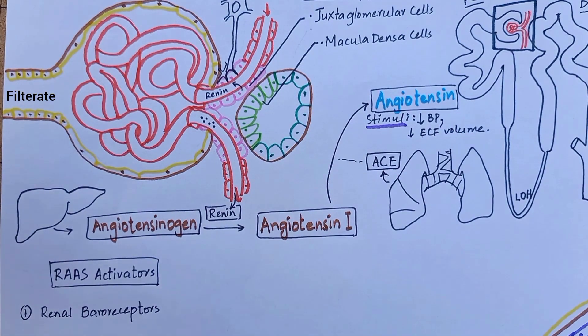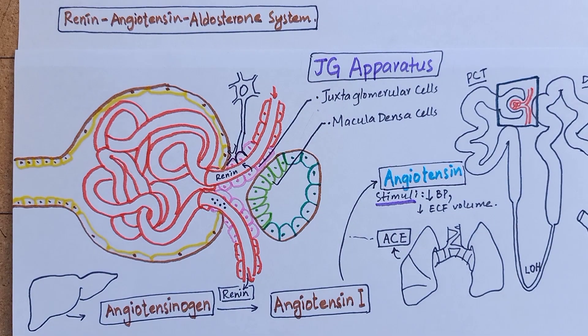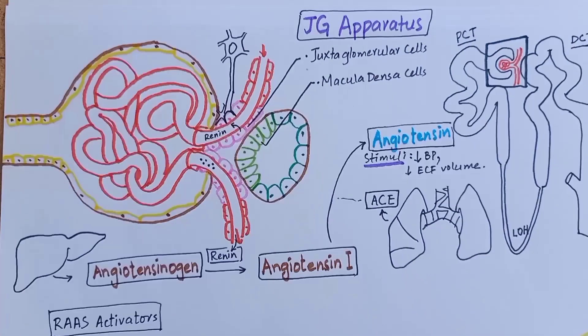Angiotensin 2 plays a very important role in maintaining blood pressure. It is perhaps the most powerful sodium-retaining hormone and a powerful vasoconstrictor. Angiotensin 2 has its central effects and renal effects.